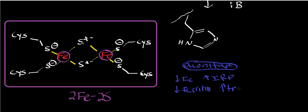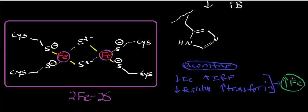The other thing aconitase as an iron response protein does is upregulate transferrin — a protein in the blood that moves iron to and from different places, initially from the duodenum where most iron absorption takes place to various tissues. So this is a type of negative feedback: when you have low iron, aconitase jettisons its iron-sulfur center, becomes an iron response protein, downregulates ferritin, upregulates transferrin, and that ultimately leads to increased iron in the periphery.